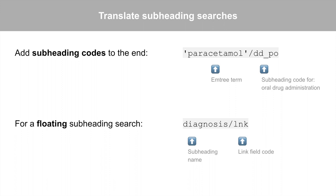Here's a quick overview on translating Embase subheading searches. Add subheading codes to the end of an EmTree term. In this example, I added the subheading for oral drug administration. For a floating subheading search, which seeks a subheading attached to any EmTree term, enter the full subheading name followed by the link field code, forward slash LNK. Refer to the Embase help manual for details.